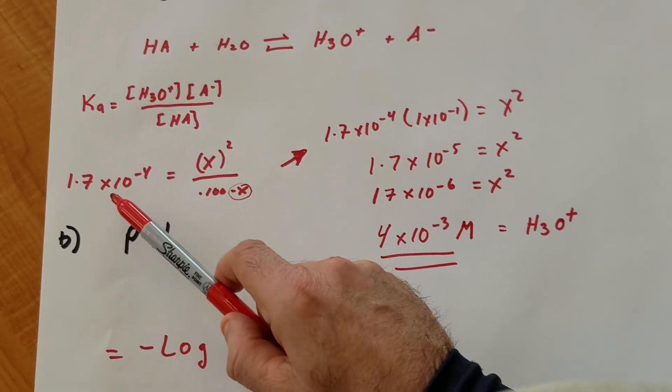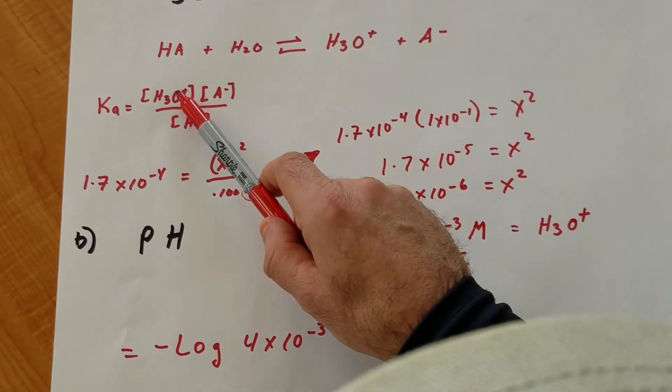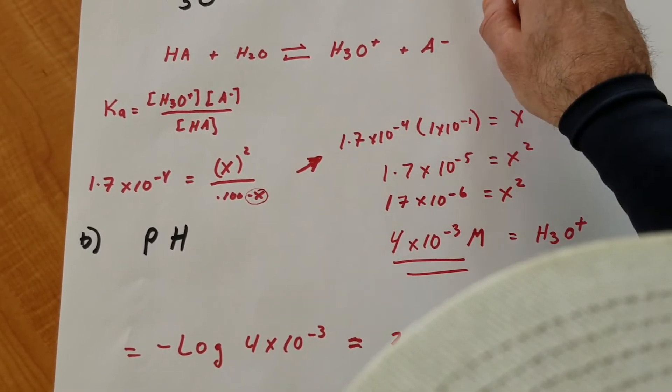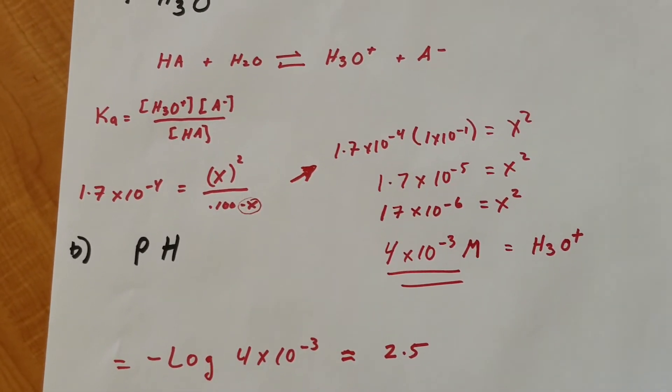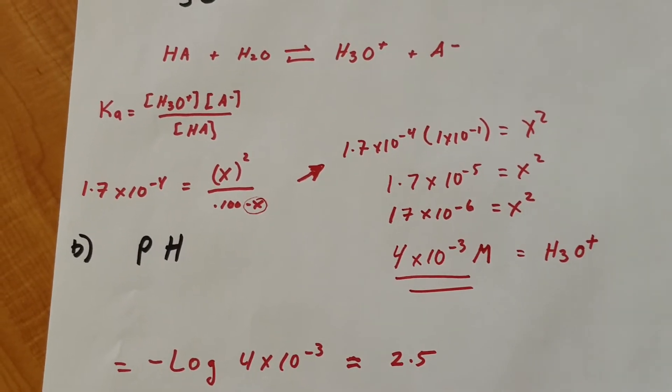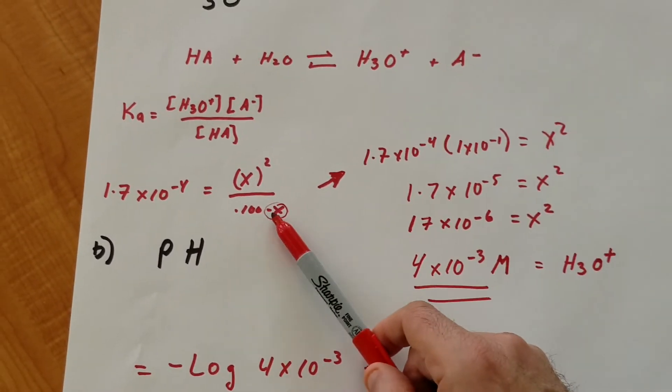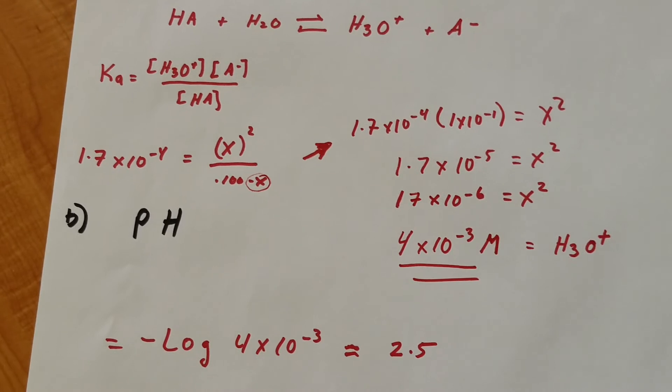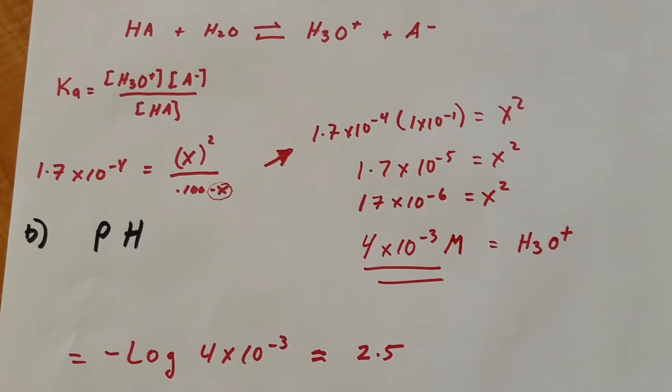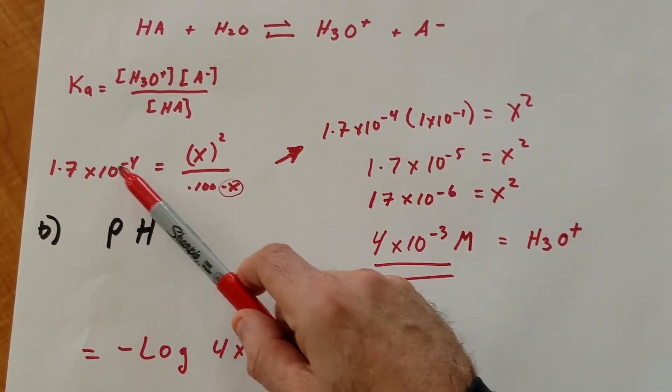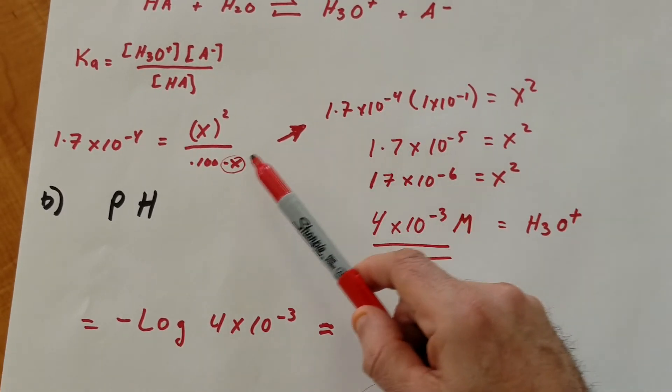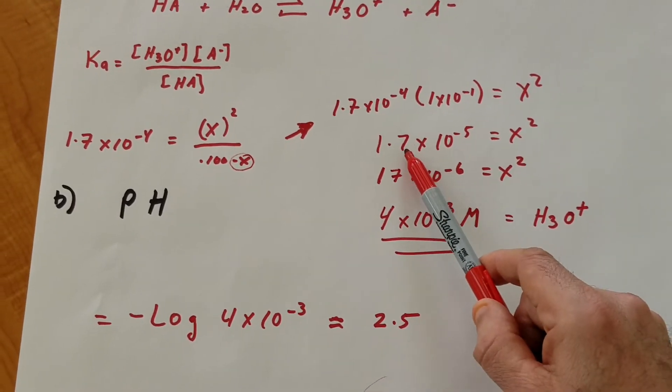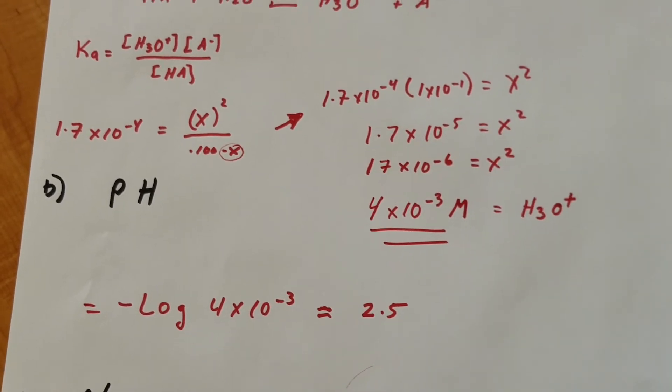Let's put the numbers in. The Ka is 1.7 × 10^-4. Since this is a one-to-one ratio, we call it X times X, or X squared. And then the bottom, the original amount, initially, was 0.100. But at equilibrium, we're obviously going to lose some of that, and it's going to be 0.100 minus X. However, for the DAT exam, we're always going to neglect the X in the denominator, so we don't have to do a quadratic equation. So that's going to give me, when you cross multiply, the 1.7 × 10^-4 times 0.100, which is 10^-1, equals X squared. This gives me 1.7 × 10^-5 equals X squared.